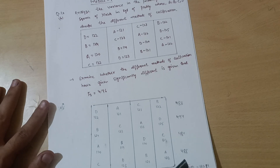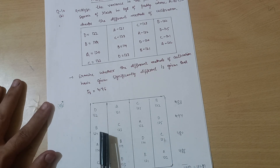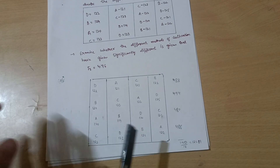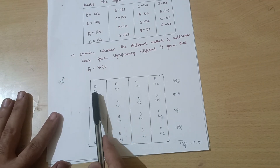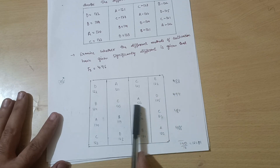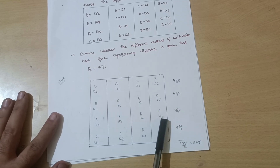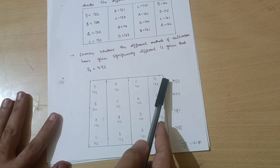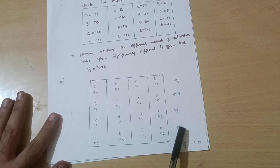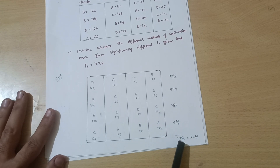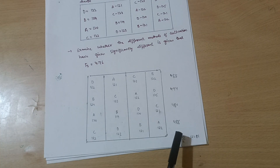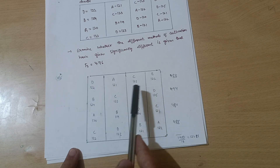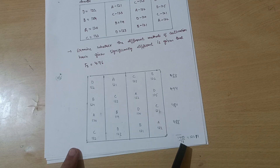As usual, first write down the table as it is. In the Latin Square design, we take the summation of the rows. Take the sum of the first row - you will get 480. The second row gives 494, the third row gives 480, and the fourth row gives 488. The grand total summation is 1950. Divided by total number of observations - a 4×4 design, so 16 - gives 1950 divided by 16 equals 121.87.